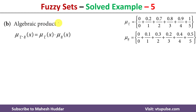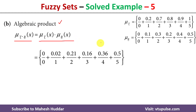Coming to the next one, known as algebraic product. This is how the algebraic product between two fuzzy sets is denoted. The answer is straightforward — we take the multiplication of membership value of x in both fuzzy sets: 0 × 0 = 0; 0.2 × 0.1 = 0.02; 0.7 × 0.3 = 0.21, and so on.